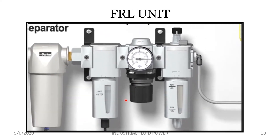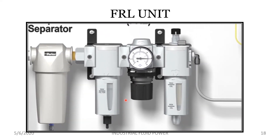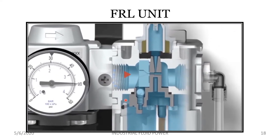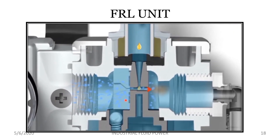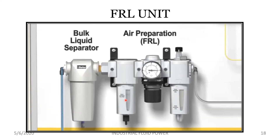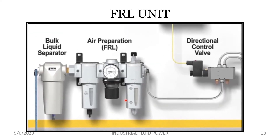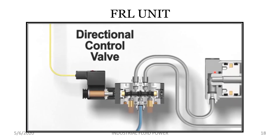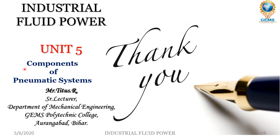Finally, in specific applications such as air motors or pneumatic tools, a lubricator can be added to distribute a fine mist of lubricant into the compressed air to help lubricate downstream components. Now that the compressed air is clean, dry, and set to the correct pressure, the next step is to direct it where to go to create motion — a directional control valve is used to achieve this task. Thank you students for watching this session, see you in the next class.